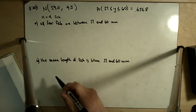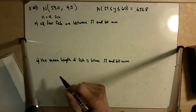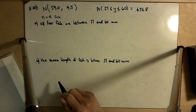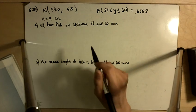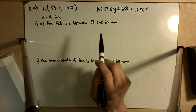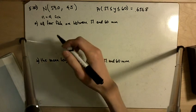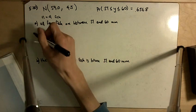Carefully read parts A and B and make sure you understand the difference between what those questions are asking. So here, part A: all four fish are between 51 and 60 millimeters. This is very much a binomial problem.